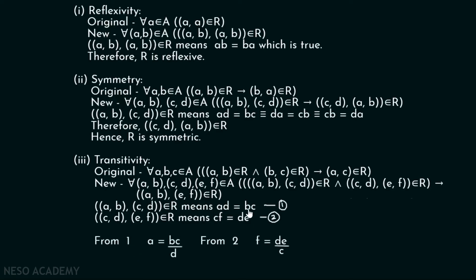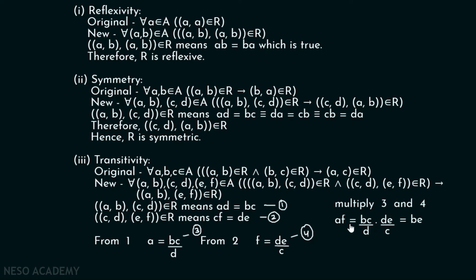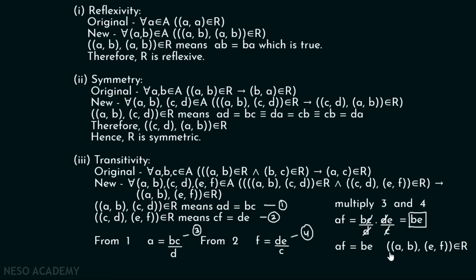From equation one, A equals BC divided by D. From equation two, F equals DE divided by C. Multiplying these: AF equals (BC/D) times (DE/C). We can cancel C with C and D with D, giving AF equals BE. AF equals BE means the ordered pair ((A,B),(E,F)) belongs to R. Therefore R is transitive.